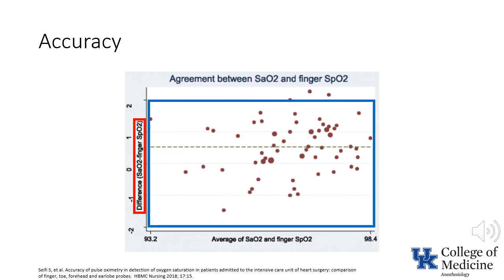As indicated by the blue box, essentially all of the values reported for SpO2 were within about 2% of the values reported from the blood gas. This is consistent with studies which have demonstrated that the SpO2 is within 5% of the value of arterial oxygen saturation measured by a co-oximeter. This relationship holds true for values of saturation between 70 and 100%.